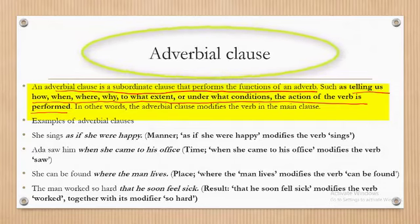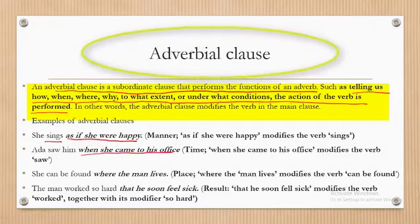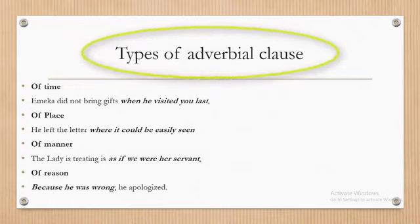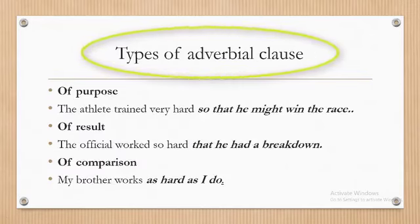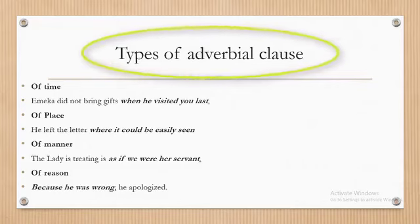Here are examples of adverbial clauses. 'She sings as if she were happy' — 'as if she were happy' tells us how she sings; it is an adverbial clause of manner. 'Adab saw him when she came to his office' — 'when she came to his office' tells us when she saw him; it is an adverbial clause of time. There are different adverbial clauses: of manner, time, place, reason, concession, and others.